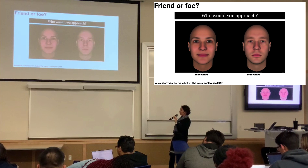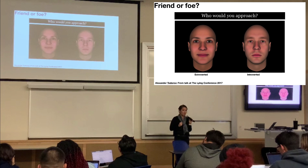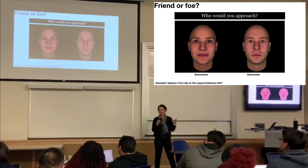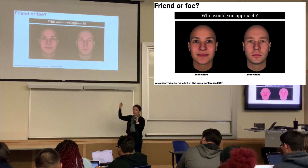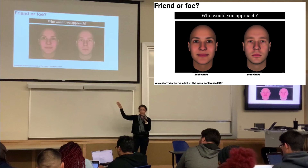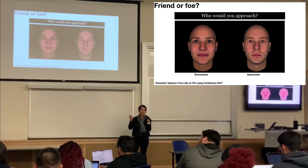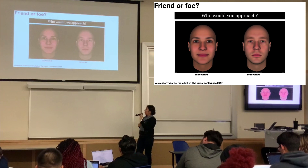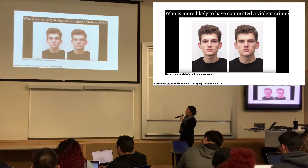In this example, the experimental question was: who would you rather approach — the person on your left or the person on your right? They used a computational model to morph components of the face to change from one to another, and they're able to influence how you would act just by changing the facial features. The person on the left is modeled to be an extrovert and the person on the right is modeled to be an introvert.